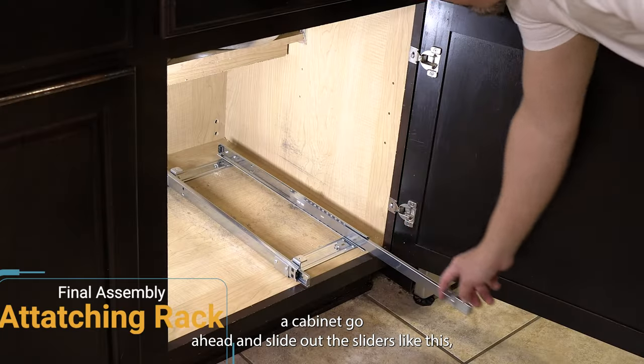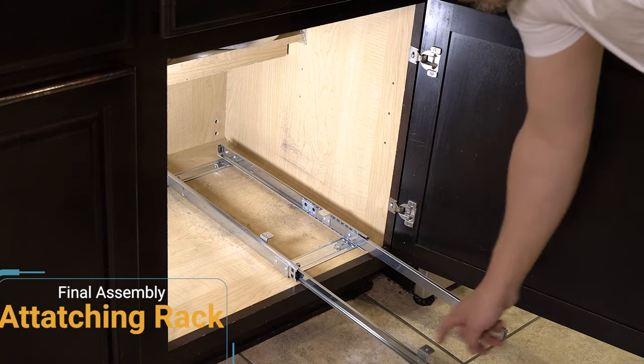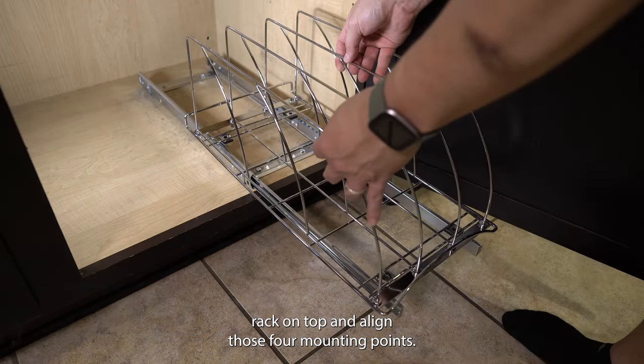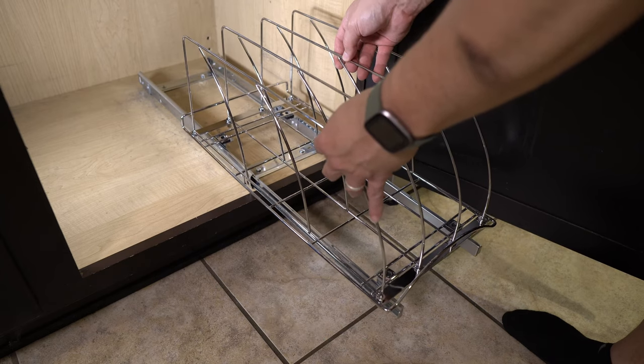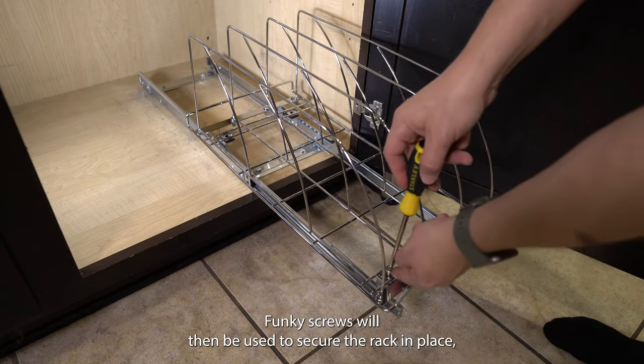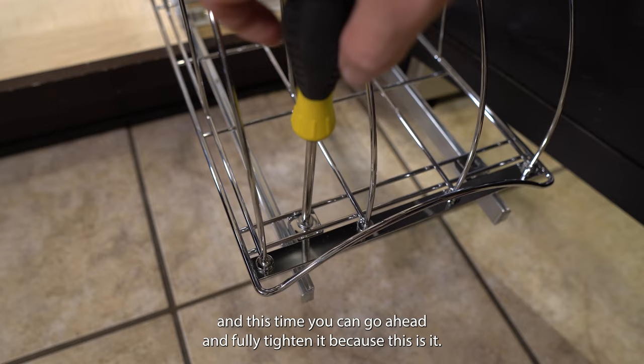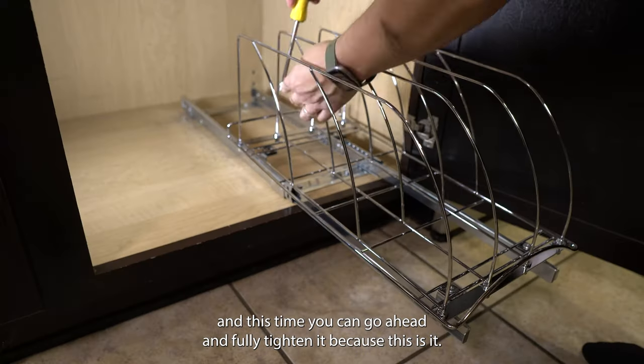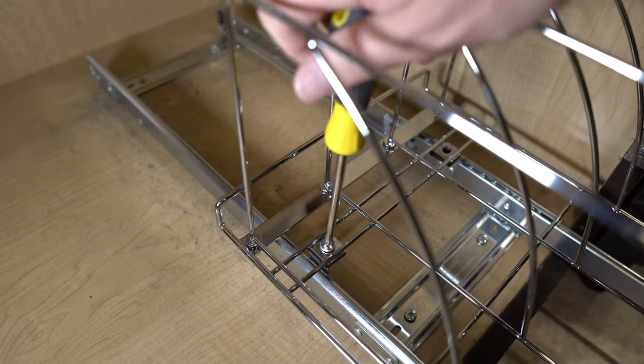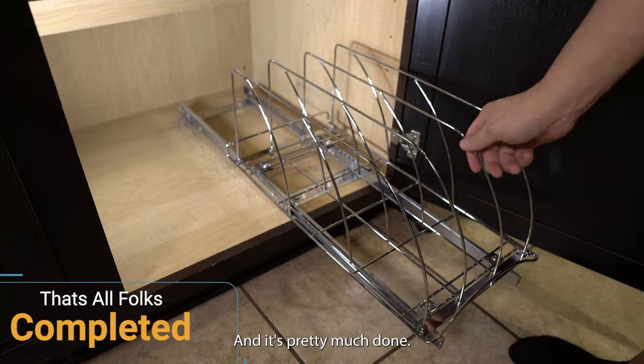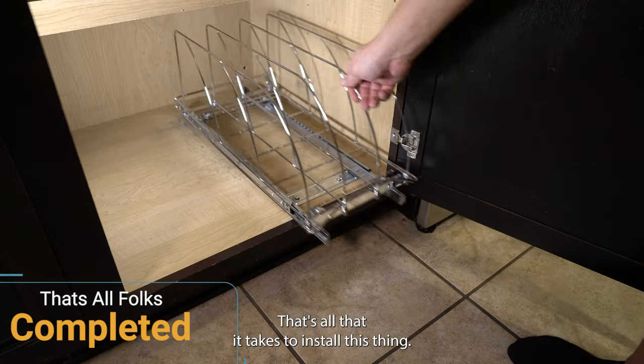Back in the cabinet, go ahead and slide out the sliders like this. And then you're going to place the wire rack on top and align those four mounting points. Funky screws will then be used to secure the rack in place. And this time you can go ahead and fully tighten it because this is it. And it's pretty much done. That's all that it takes to install this thing.